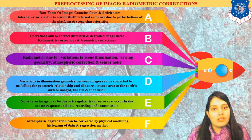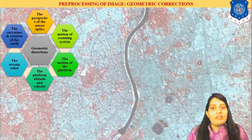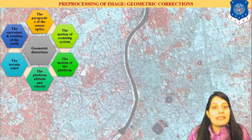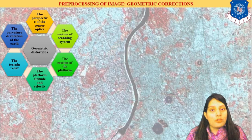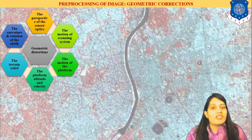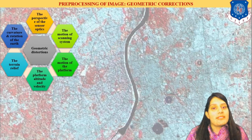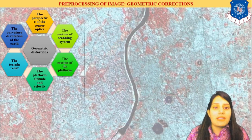Now we are going to discuss geometric corrections. Geometric corrections address errors due to the motion of the scanning system, the sensor and satellite motion, the scanning motion, the perspective of the sensor optics, the curvature and rotation of the earth, relief terrain, and the platform altitude and attitude of the sensors placed on the platform that is taking the image.